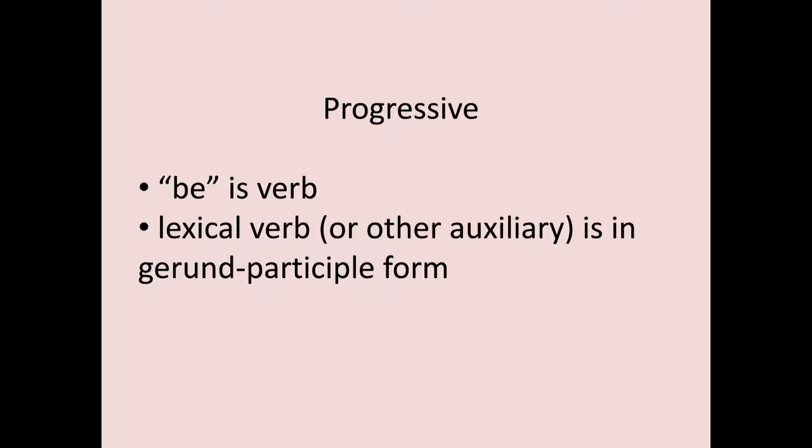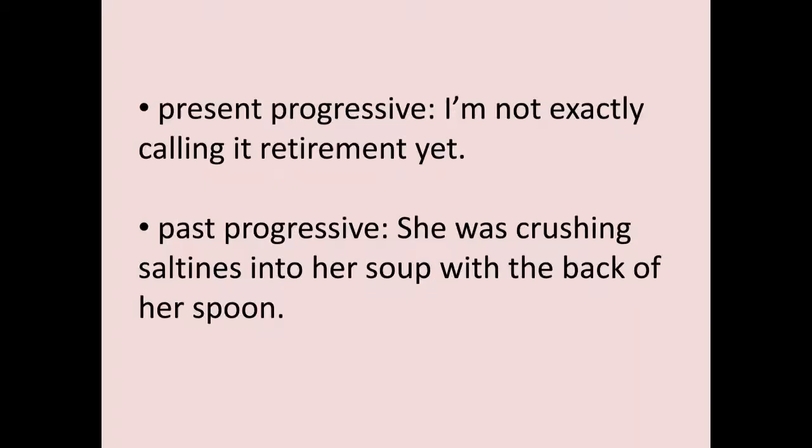Progressive works the same way — on or off — but with a different auxiliary and lexical verb form. The auxiliary is 'be,' and the lexical verb is in the gerund participle form. For example, present progressive: 'I'm not exactly calling it retirement yet' — auxiliary 'am' (present tense), lexical verb 'calling' (gerund participle). Past progressive: 'she was crushing' — auxiliary 'was' (past tense), lexical verb 'crushing' (gerund participle). Both are progressive and non-perfect.